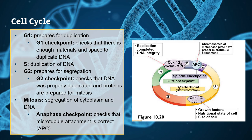Now for the actual steps of the cell cycle. First we have G1, which prepares for duplication, and we have a checkpoint after G1 that checks there's enough materials, surface area, space, and volume to duplicate that DNA. Then in the S phase, or synthesis phase, the duplication of your DNA takes place. Then we move on to G2, which prepares for segregation and mitosis — the G2 checkpoint checks that the DNA is properly duplicated with no errors and that proteins are prepared for mitosis. Then mitosis is that segregation of the cytoplasm and DNA, with a checkpoint in anaphase checking that microtubule attachment is correct.